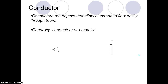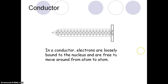If we draw the arrangement of the charged particles in a conductor, we would have positive charges or protons and negative charges or electrons. The big thing you need to know is that in a conductor, the electrons are very loosely bound to the nucleus. They are free to move around from atom to atom. It's easy for electrons to move from one atom to another because they are so close together.